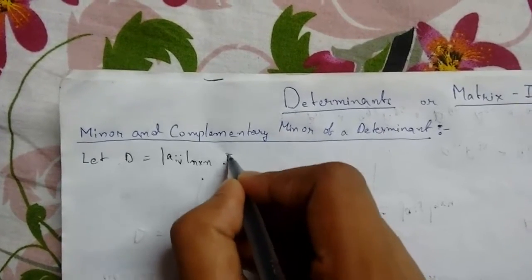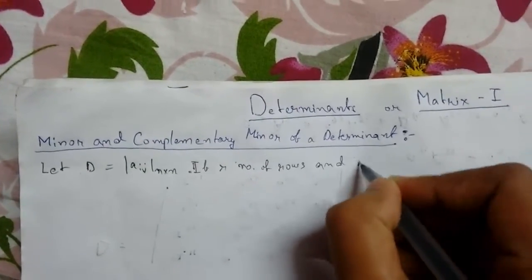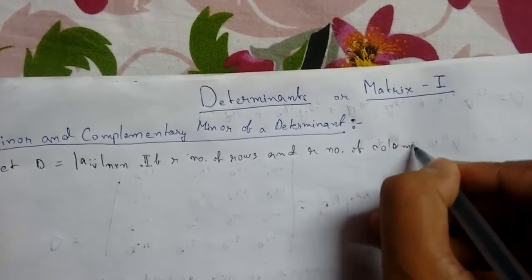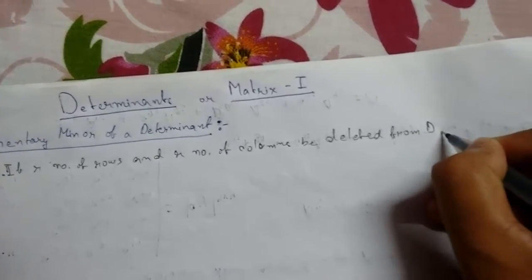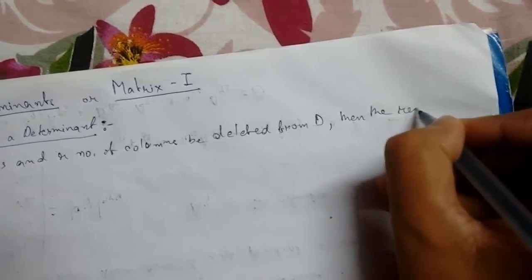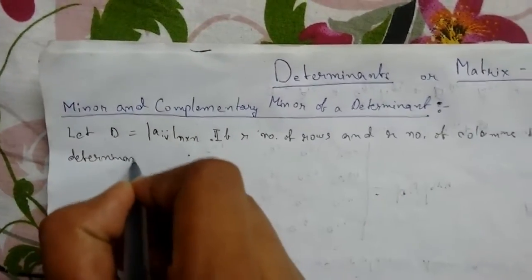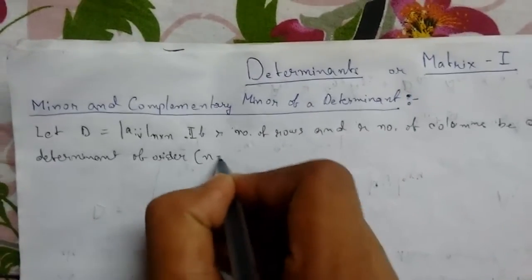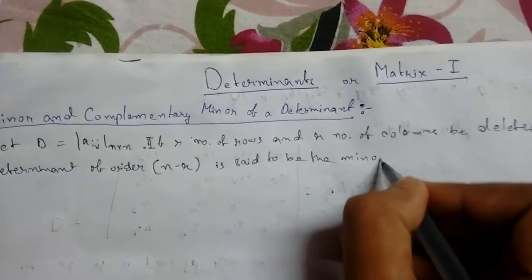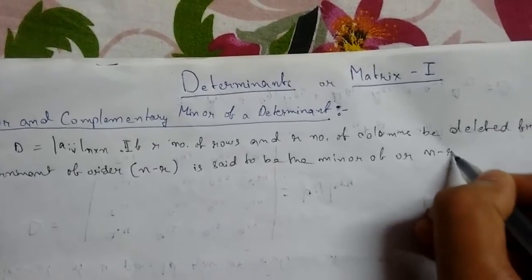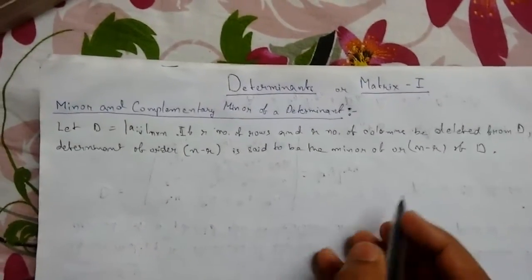Then if r number of rows and r number of columns be deleted from the determinant D, then the remaining determinant of order n minus r is said to be the minor of order n minus r of D.